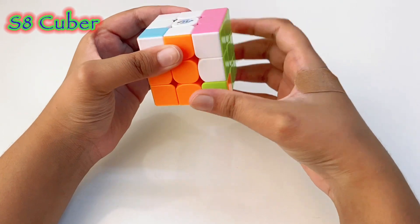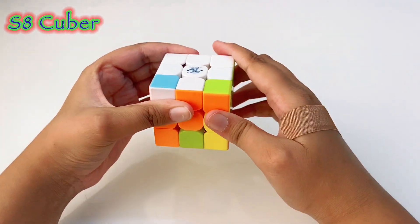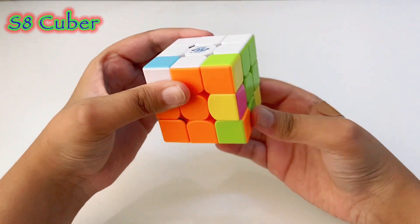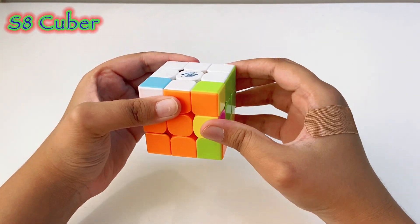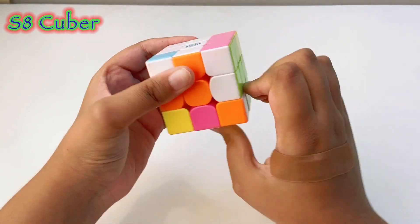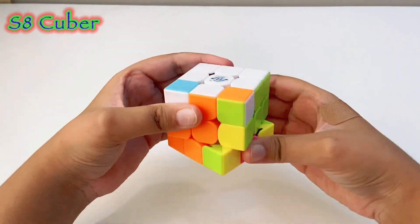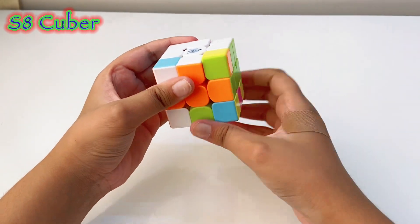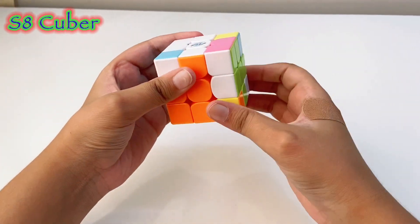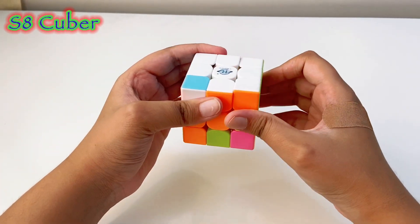The algorithm is: r dash d dash r d. We'll do that till this piece comes up oriented. So let's go: r dash d dash r d, r dash d dash r d, r dash d dash r and d.